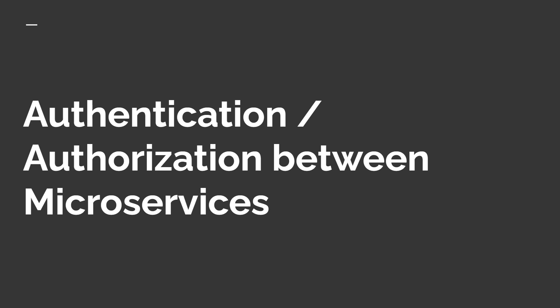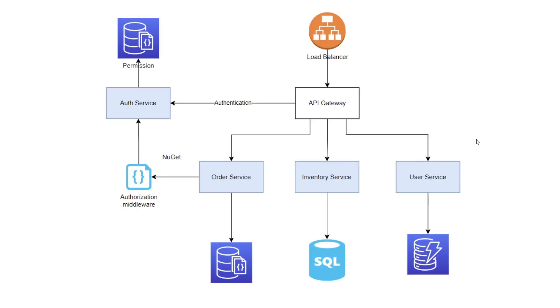Hello everyone and welcome to dotnet core central. A couple of videos back I talked about authentication and authorization between microservices, and after that video I got some requests about doing a practical or simple example of how this can be achieved. There are a few ways we can implement authentication and authorization.